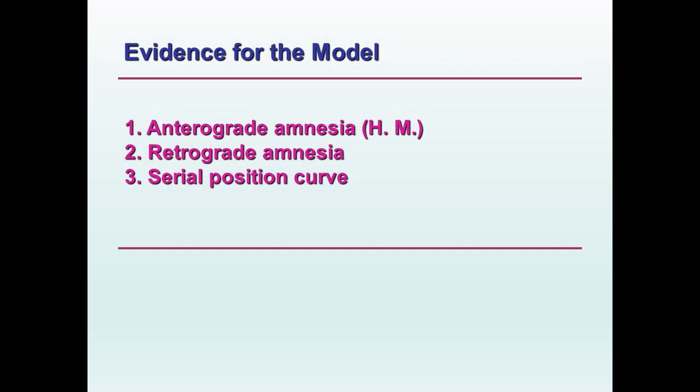There is evidence for the three storage model of memory, and I want you to be familiar with three pieces of evidence. First, anterograde amnesia. Anterograde amnesia occurs when there has been damage to the hippocampus in both hemispheres — a bilateral hippocampectomy. There are times when brain surgery results in this, and individuals who have undergone it have come to be known by their initials, for instance HM and NA. The type of memory deficit that occurs is very interesting.